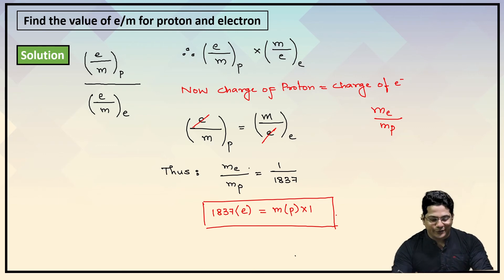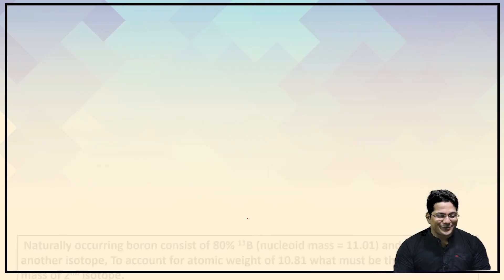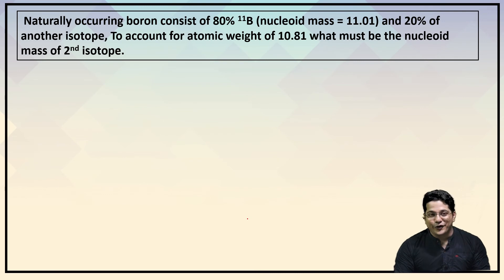So let's move on to the third problem. This is kind of a different problem. The third problem says: naturally occurring boron contains 80% of B-11 (nucleoid mass 11.01) and 20% of another isotope which accounts for the total atomic mass of 10.81. What must be the nucleoid mass of the second isotope?